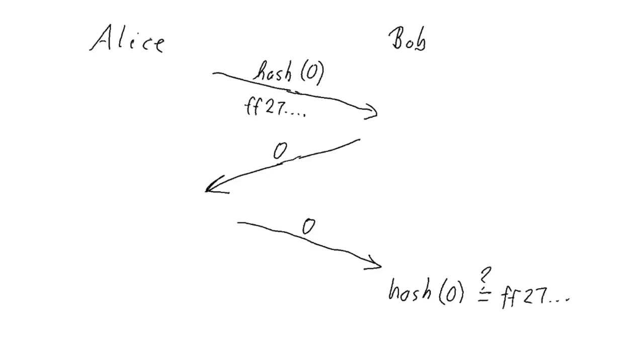So this sounds promising, but there's one big problem with this. Because in this game, there are only two choices, only zero and one. So there are only two possible hashes.